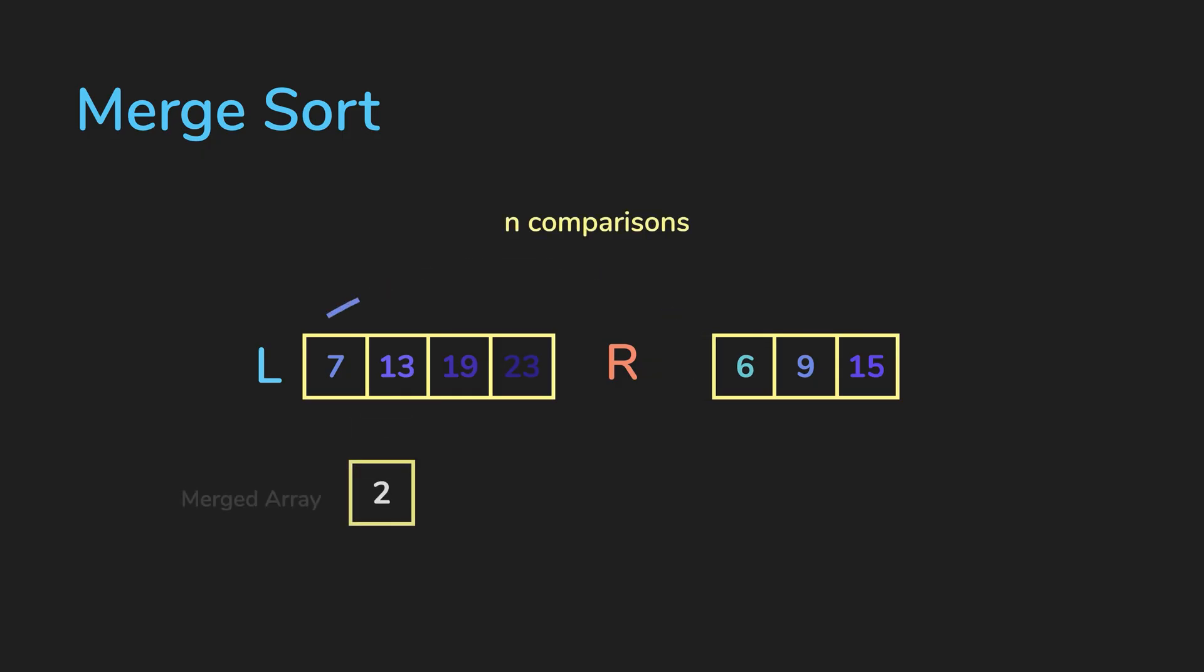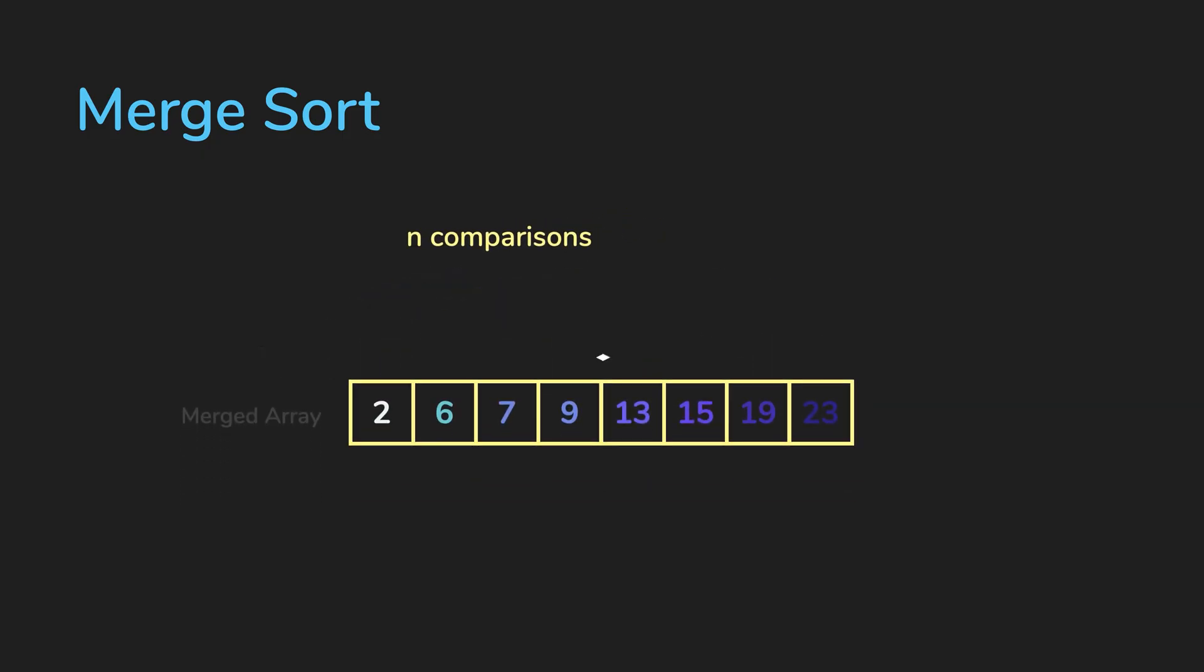And we're guaranteed to only do n comparisons, where n is the number of elements in the merged array, which makes merging a linear time complexity operation.